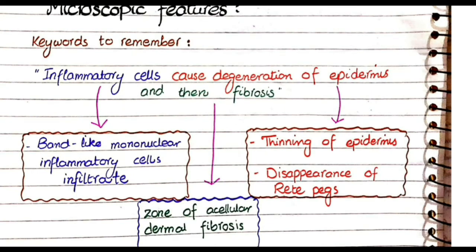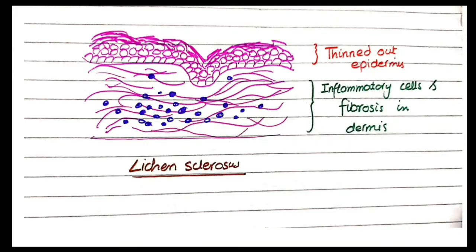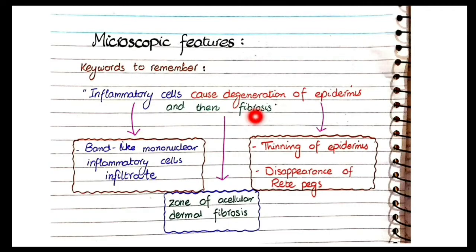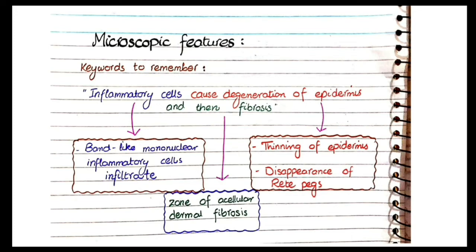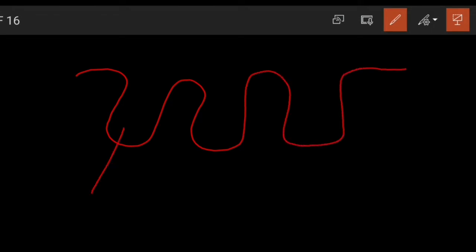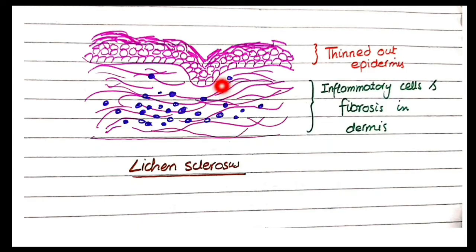The microscopic features of lichen sclerosis follow three keywords: inflammatory cells, degeneration of epidermis, and fibrosis. First, you will see a band-like mononuclear inflammatory cells infiltrate — mononuclear because it is mediated by T lymphocytes. Second, you will see thinning of the epidermis and disappearance of rete pegs — the invaginations of epidermis into the underlying dermis — because the epidermis is being degenerated.